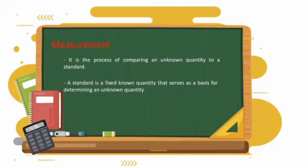A standard is a fixed known quantity that serves as a basis for determining an unknown quantity. For example, when you measure the length of your mathematics book 7 using a ruler, you are comparing the length of your book to a measurement device which is a ruler. The scales in the ruler are the standard fixed known quantities.